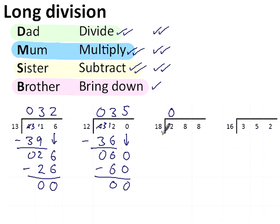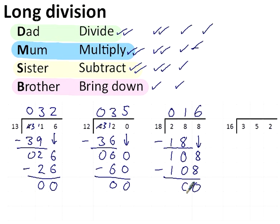18 into 2 doesn't go. 18 into 28 goes once. That's division. Multiplication. 1 times 18. Put that there. Done. Subtraction. 8 take away 8 is 0, 2 take away 1 is 1. That's done. Bring down. Bring down the 8. 108. 18 into 108 is 6. Do the multiplication. 6 times 18 is 108. Subtraction. 108 take away 108 is 0. So the answer is 16.